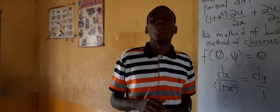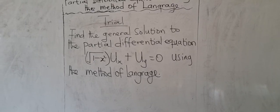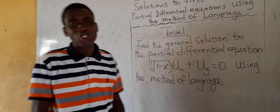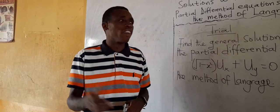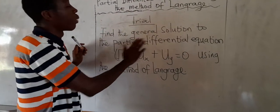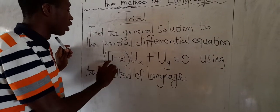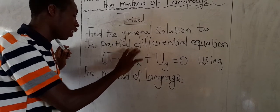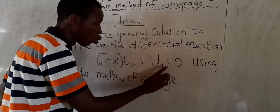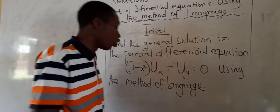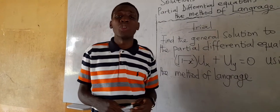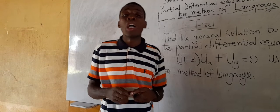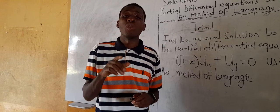I have a trial problem on the board and I encourage you to try it and leave your answers in my comment box so we can see if you are correct. Find the general solution to the partial differential equation: √(1 − x²)·∂u/∂x + ∂u/∂y = 0, using the method of Lagrange. Please try to solve it. Subscribe to my YouTube channel and click on the notification bell so that if I post a video, you'll be the first to receive it. Until we meet again, bye-bye.